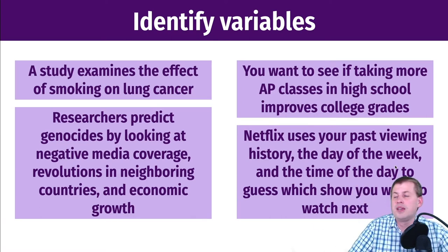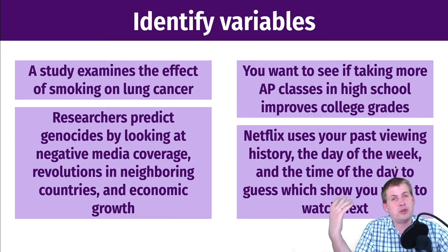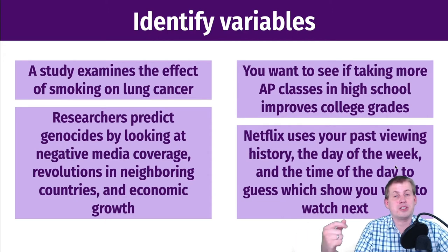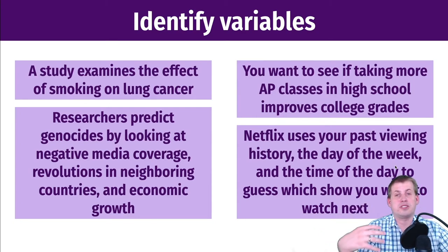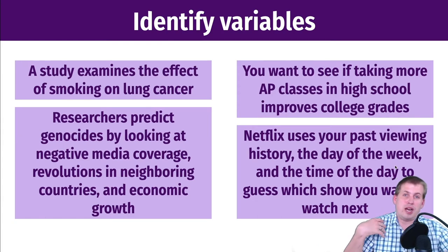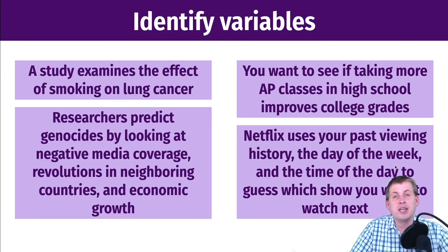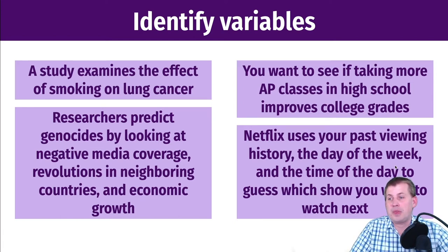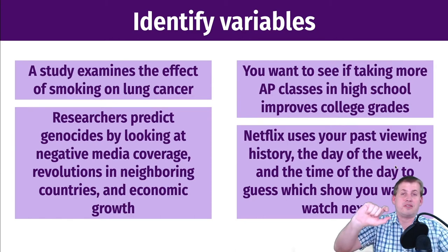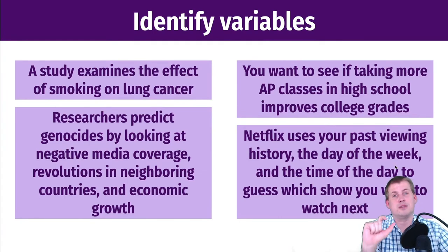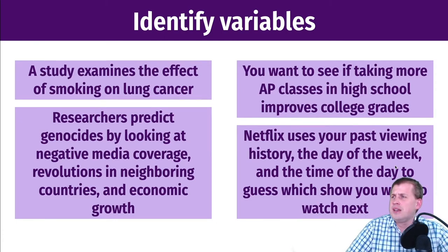That's how you identify these things in the real world. In the context of program evaluation, the outcome is generally the goal of the program — reducing poverty, increasing community engagement, boosting incomes among low-income people. Those are all outcomes, the Y variables, the dependent variables. The program itself is the explanatory variable — you're asking: does this program have an effect on the outcome? So your program is going to be an X, one of the things you use to explain the general outcome.